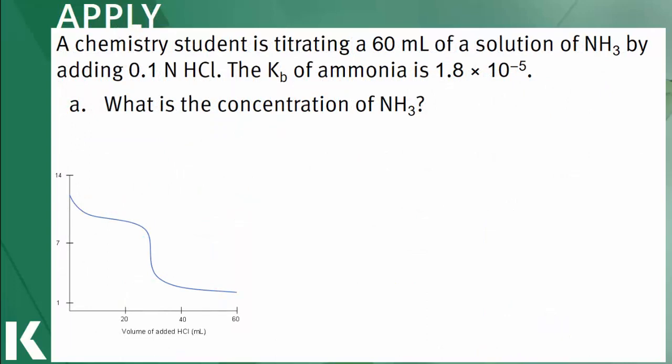A student is titrating a certain volume of ammonia, which is a weak base, by adding 0.1 normal hydrochloric acid. The Kb of ammonia is 1.8 times 10 to the minus 5. Part A asks for the concentration of ammonia. To solve for the concentration of unknown bases, use the equation NaVa equals NbVb and rearrange to solve for the normality of base Nb.